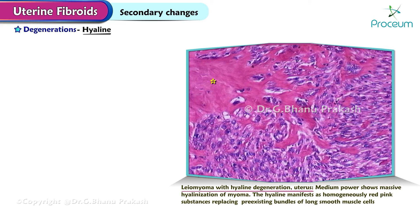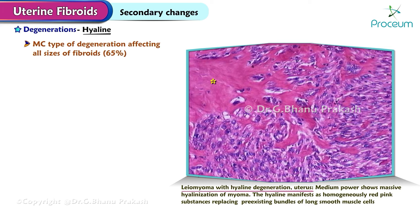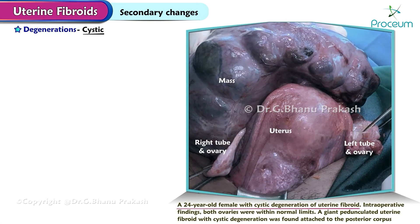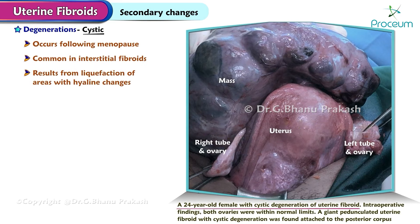Hyaline degeneration is the most common type of degeneration, affecting all sizes of fibroids, affecting 65% of fibroids. Cystic degeneration typically occurs following menopause and is common in interstitial fibroids; it results from liquefaction of the areas with hyaline changes.